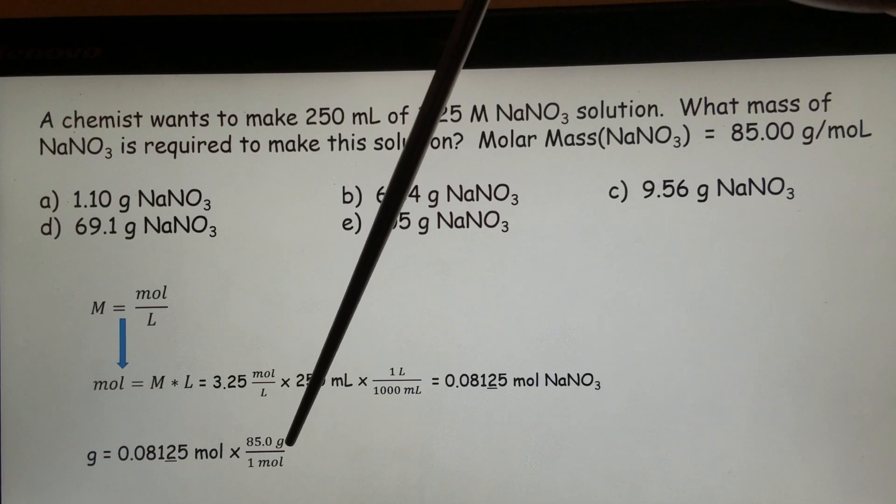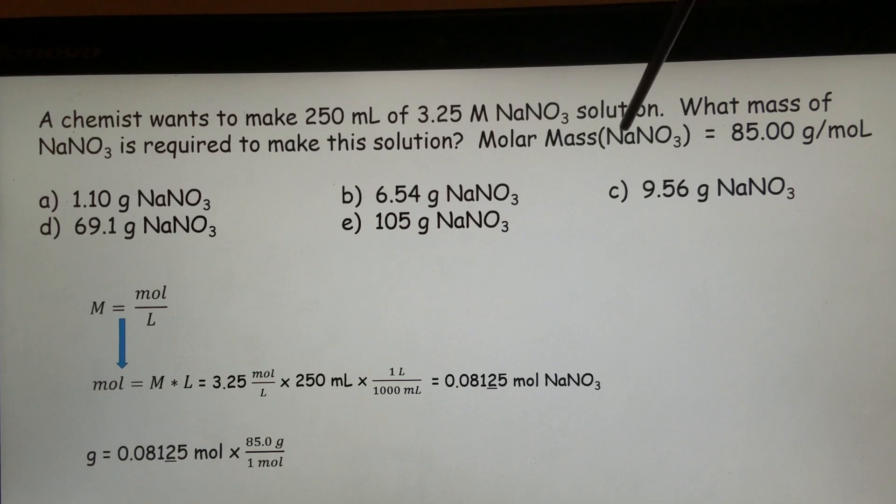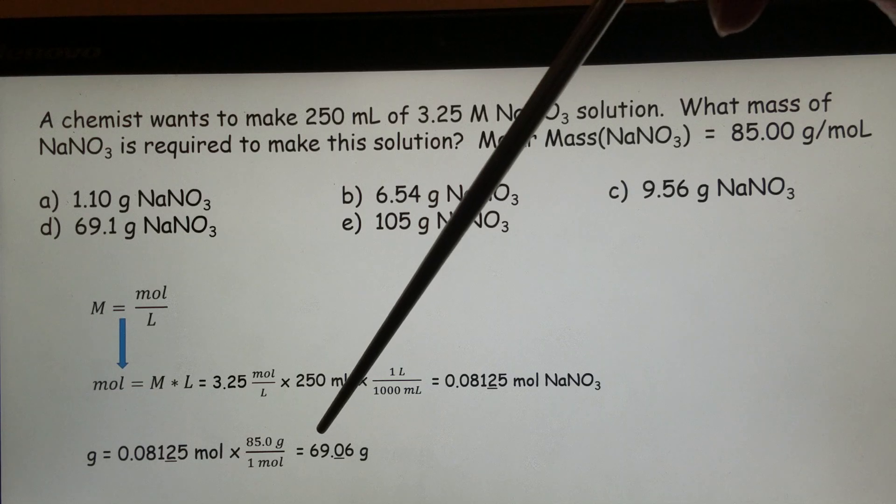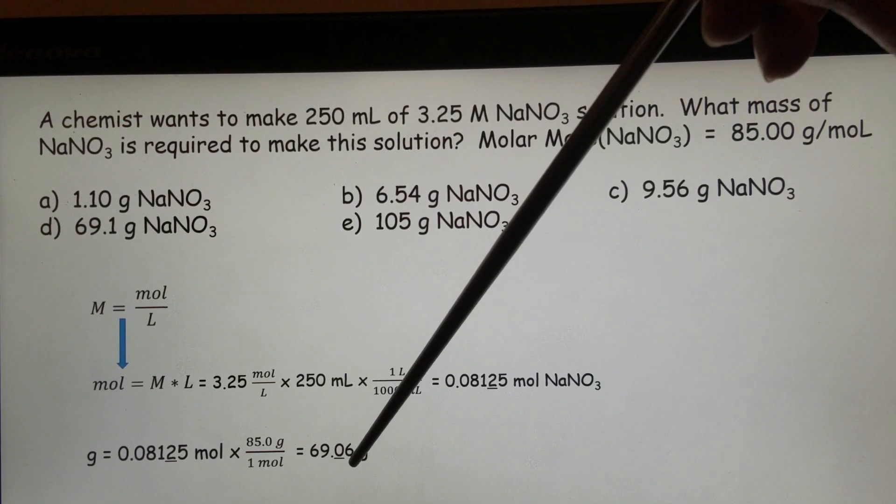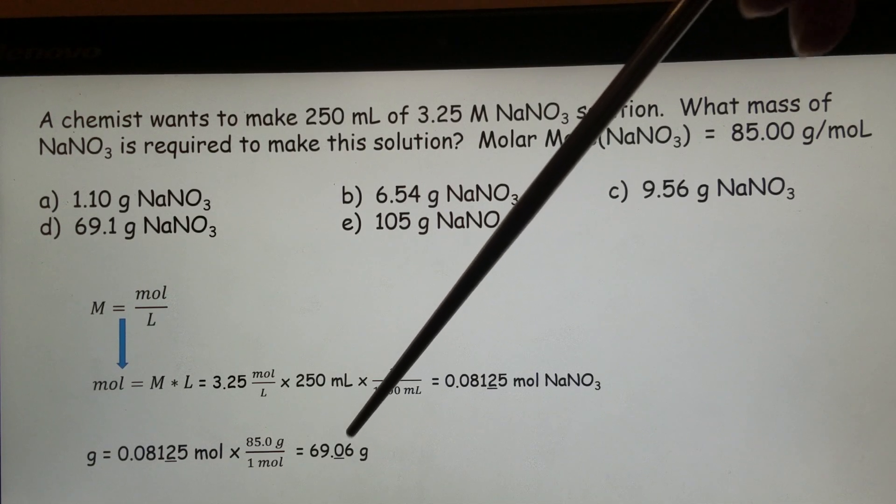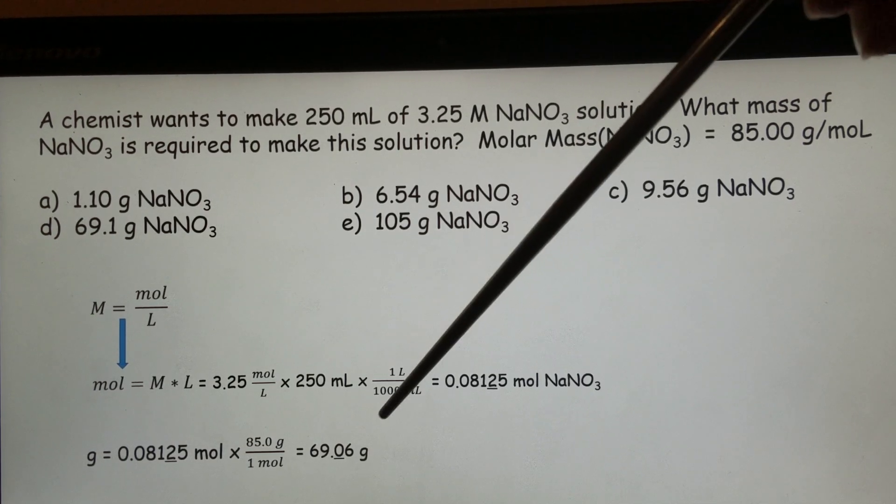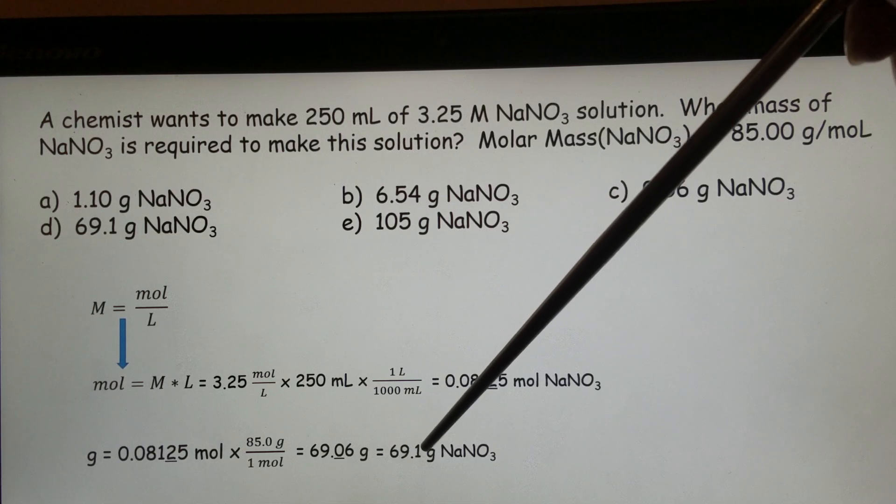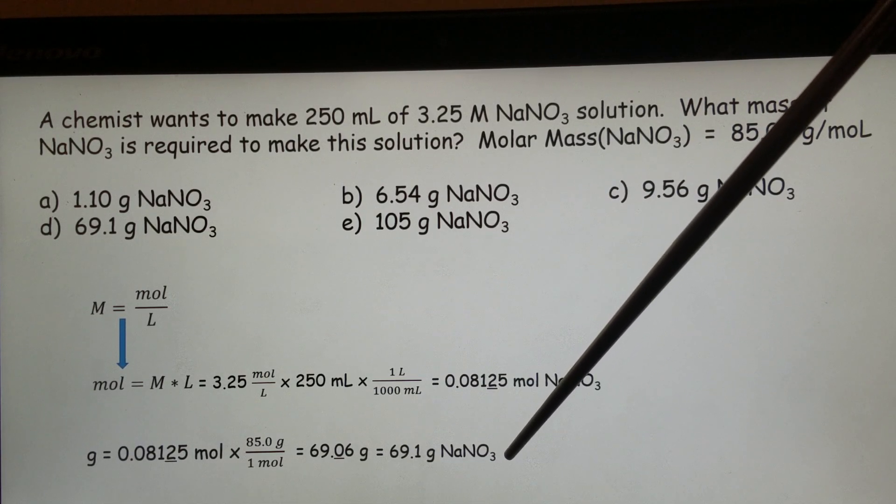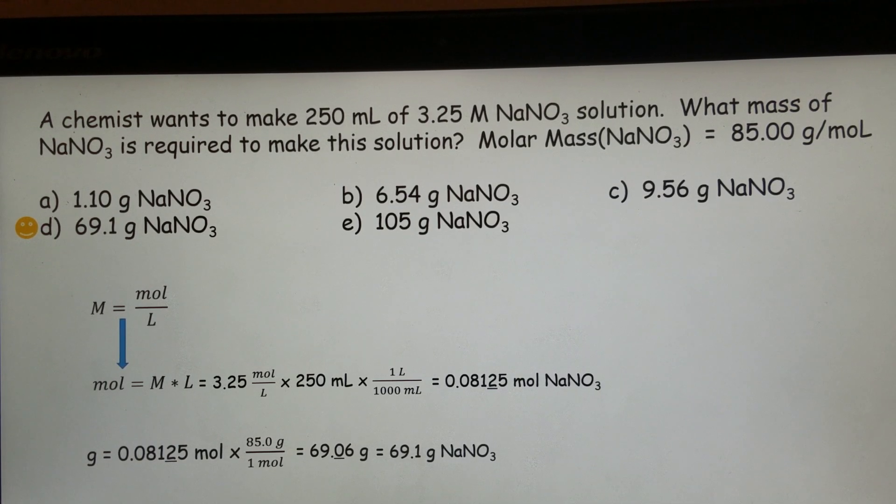to the grams, that's basically the molar mass of sodium nitrate, and then 69.06 grams, again underlined the last digit in the sig figs, so therefore the final answer should be 69.1 grams, and D is the answer for this question.